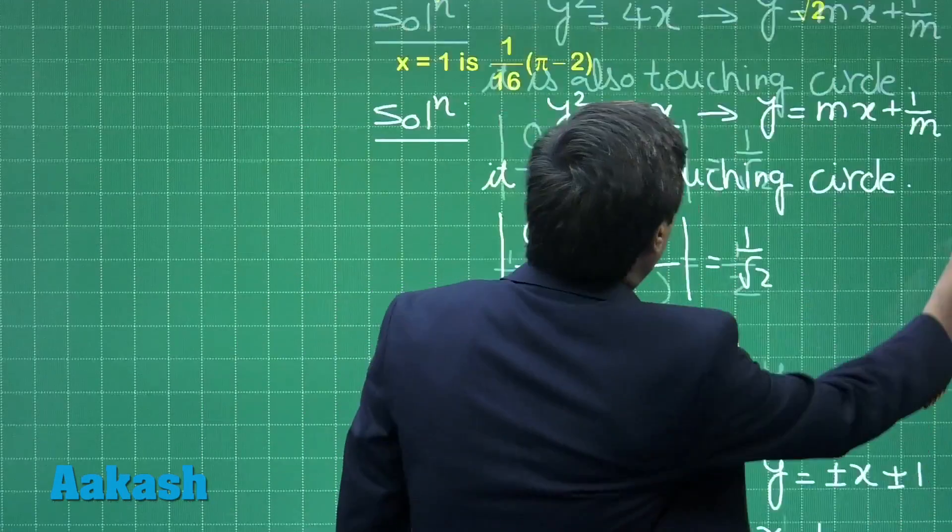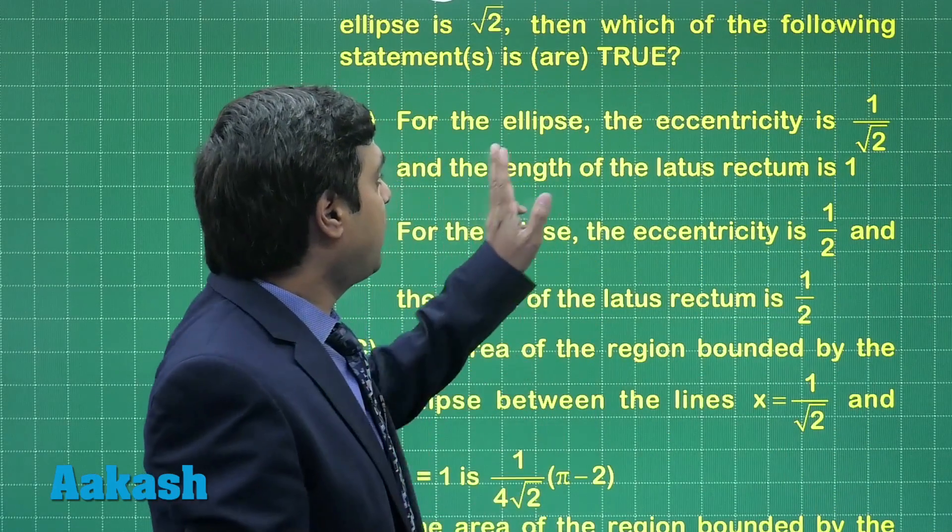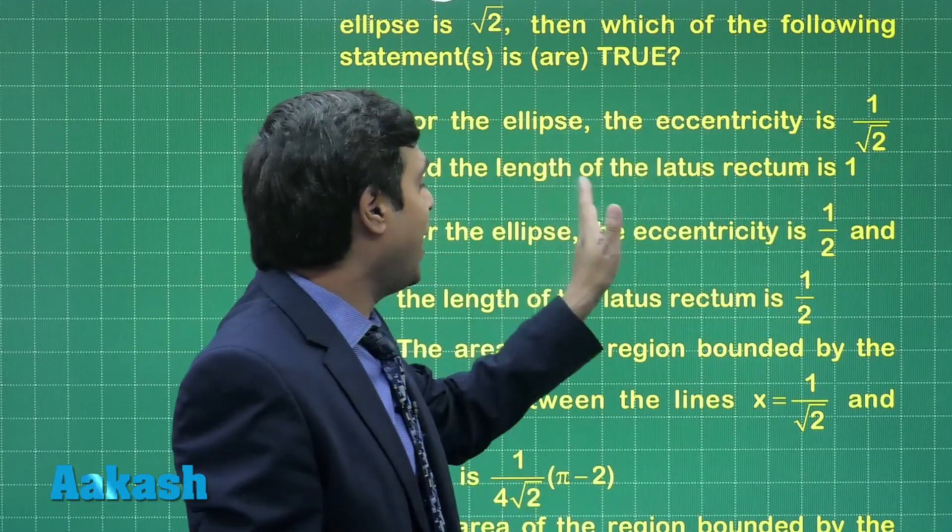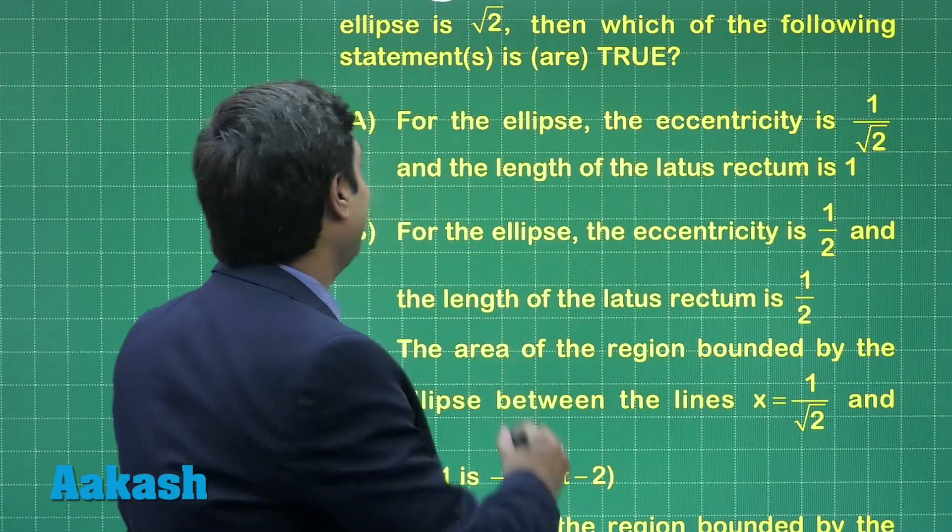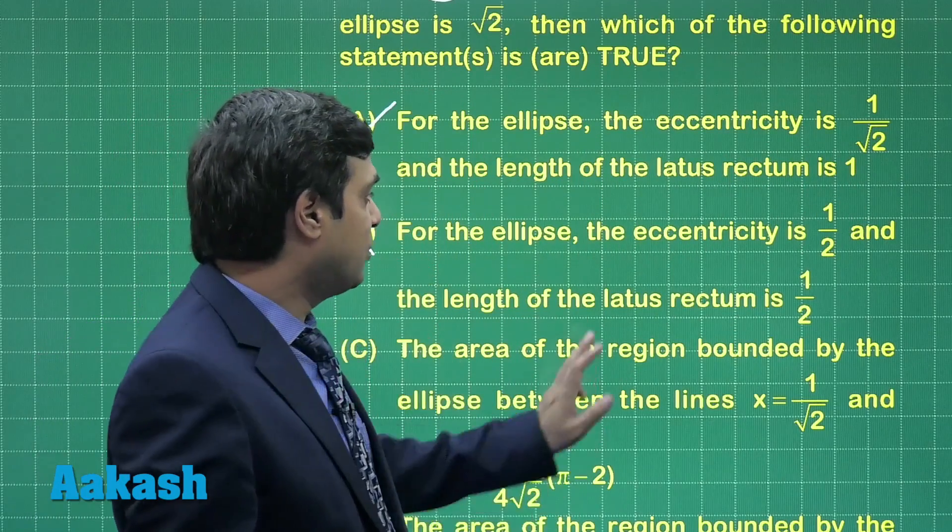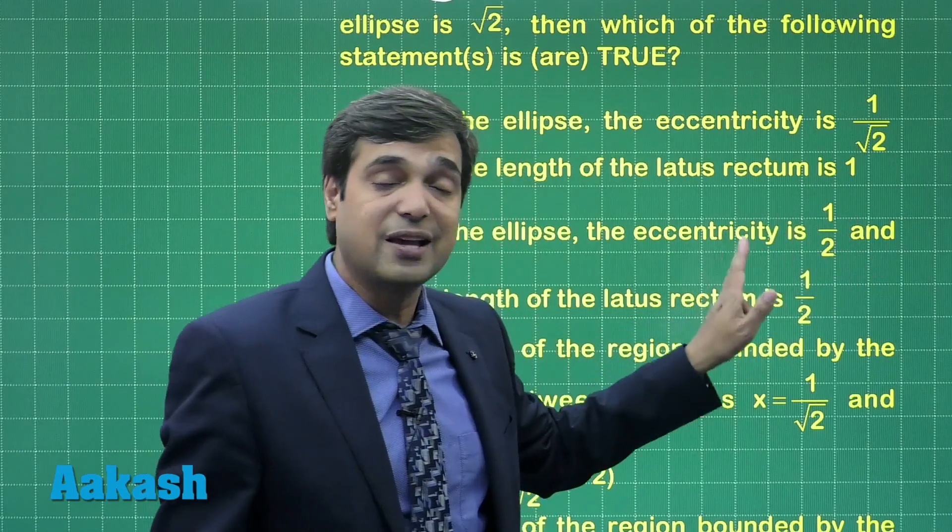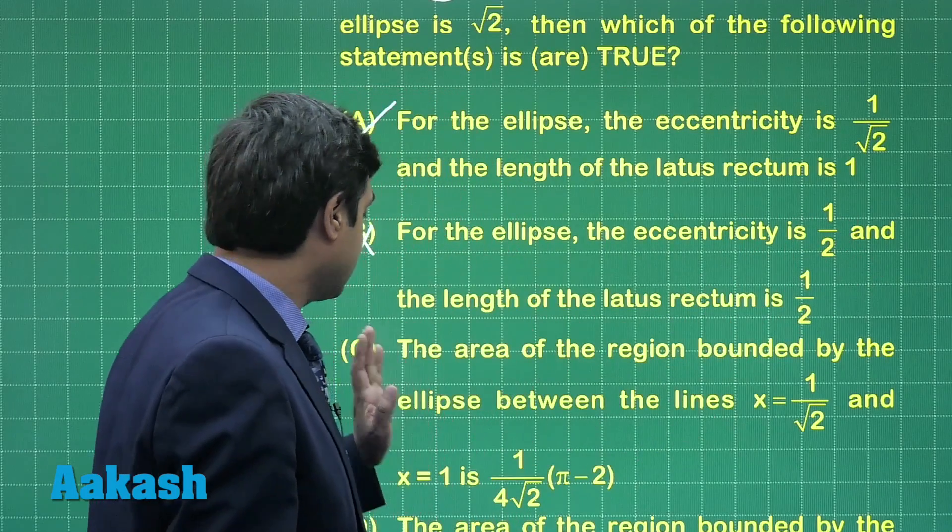So we can see from the given options, option A is talking about eccentricity as 1/√2 and latus rectum as 1, meaning it is correct. So obviously option B is not correct, which is saying eccentricity as 1/2 and LR is also 1/2.